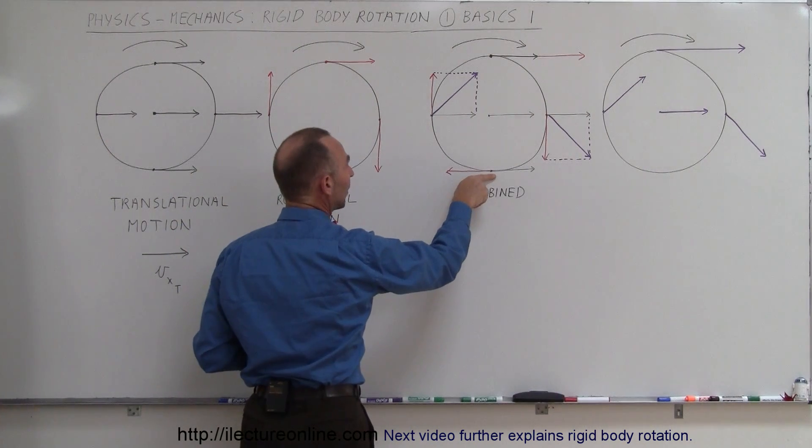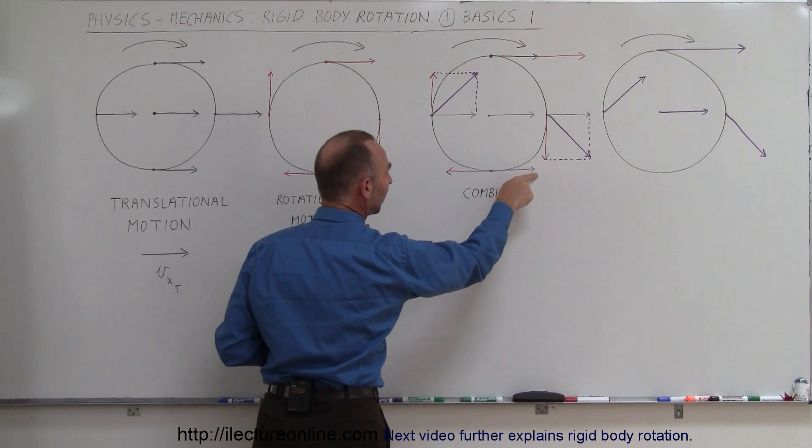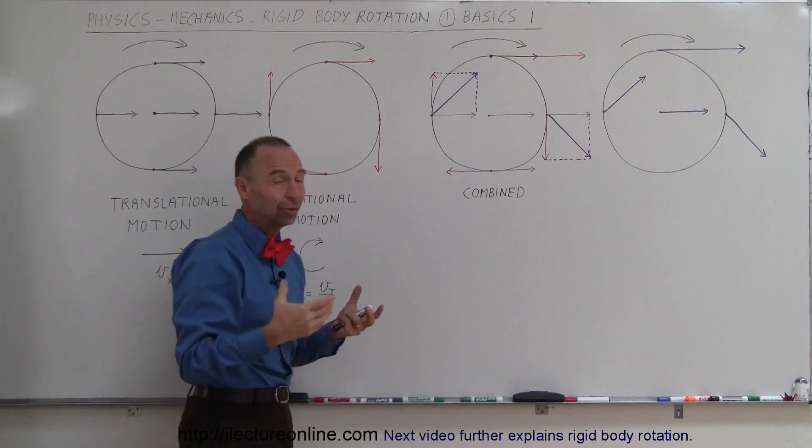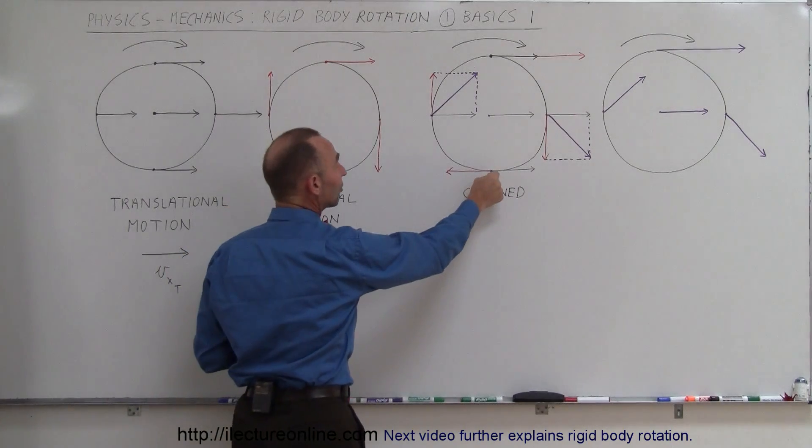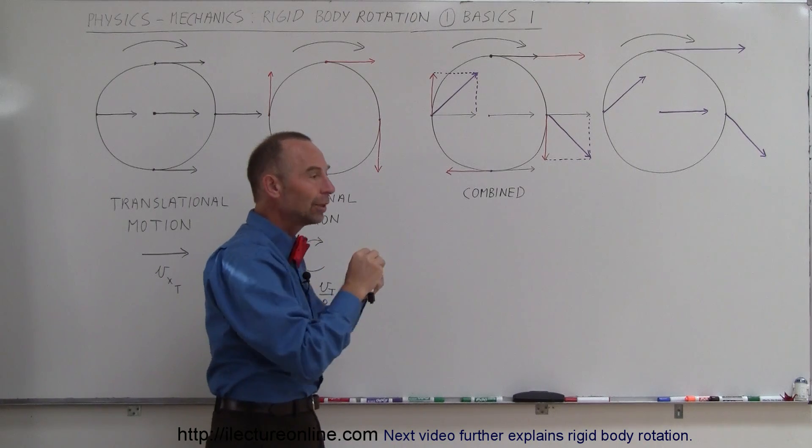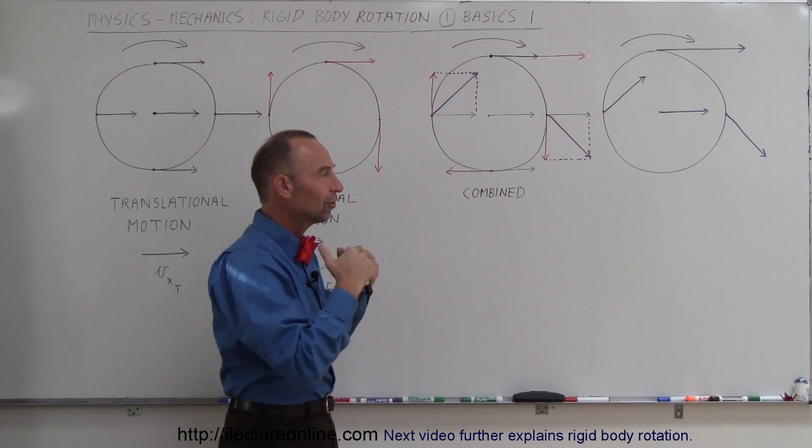At the bottom, notice that we have velocity translational to the right, and then we have velocity tangential to the left. They have to be equal in magnitude, that makes sense, and so they will cancel each other out, and so for a moment there, the bottom of the tire, relative to the road, is not moving at all, so it's stationary.